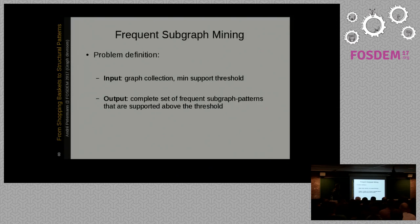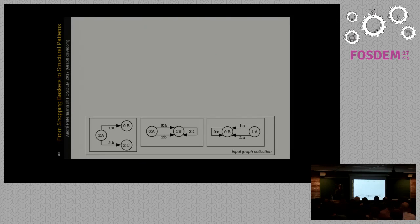The problem definition, just to conclude the introduction, is our input is a graph collection. Our collection of things in this case are graphs. And we have a min support threshold which specifies the minimum percentage of items of search space things which have to contain a pattern to be considered to be frequent. And the output is the complete set of frequent subgraph patterns which are supported above the given threshold.